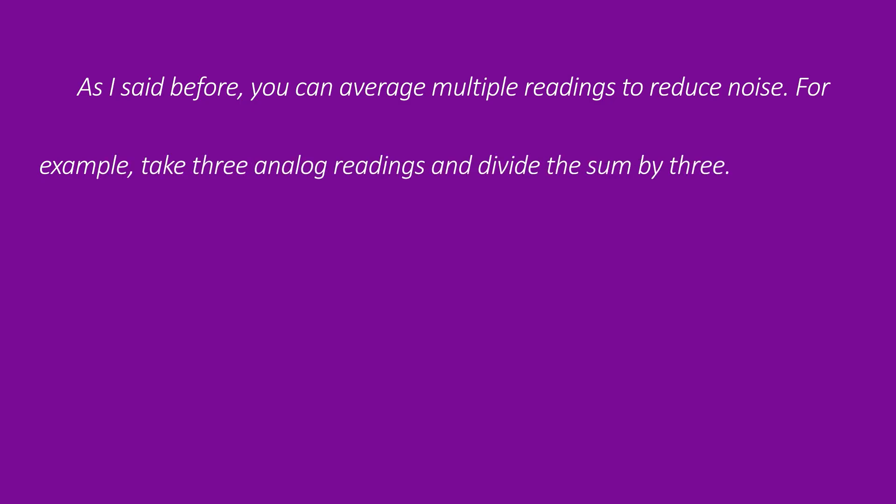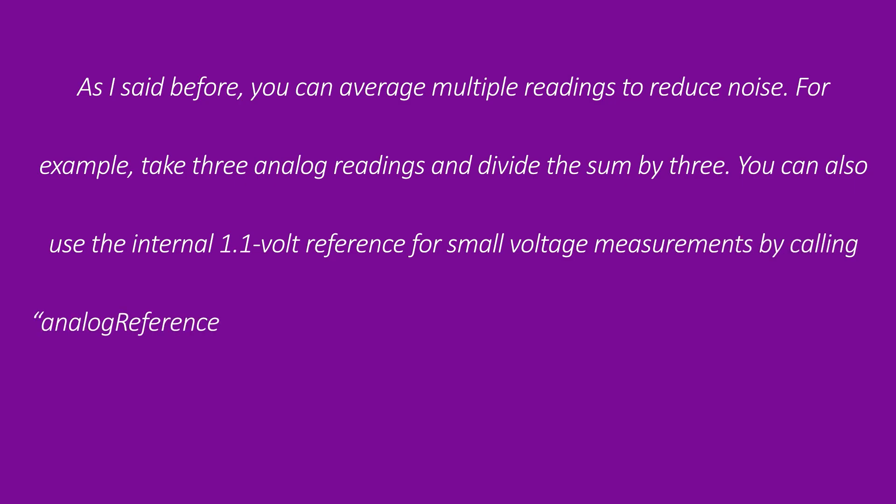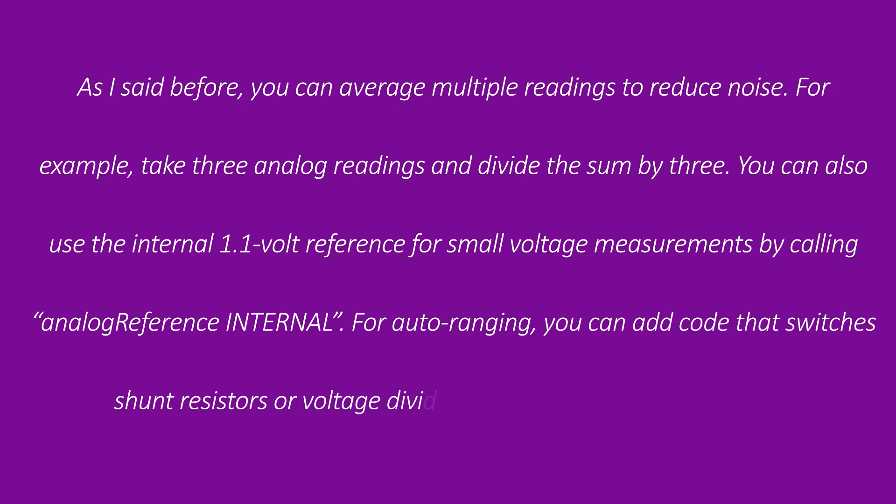As I said before, you can average multiple readings to reduce noise. For example, take three analog readings and divide the sum by three. You can also use the internal 1.1 volt reference for small voltage measurements by calling analog reference internal. For auto-ranging, you can add code that switches shunt resistors or voltage dividers based on the measured value.